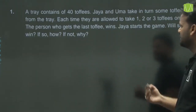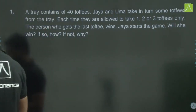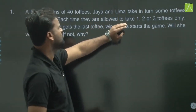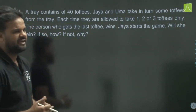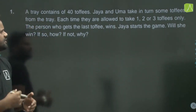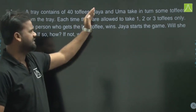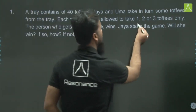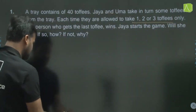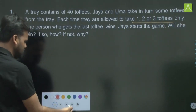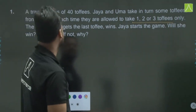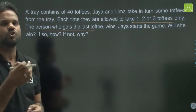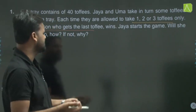The first question: a tray contains 40 toffees. Jaya and Uma take turns taking some toffees from the tray — first Jaya, then Uma, then again Jaya, then Uma. Each time they are allowed to take one, two, or three toffees. The person who picks the last toffee wins.